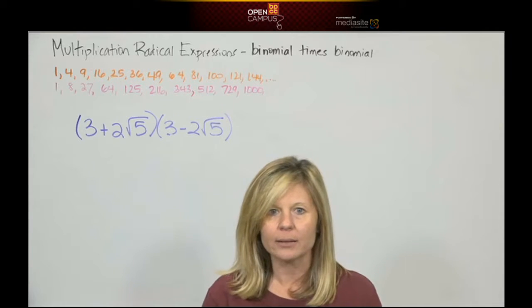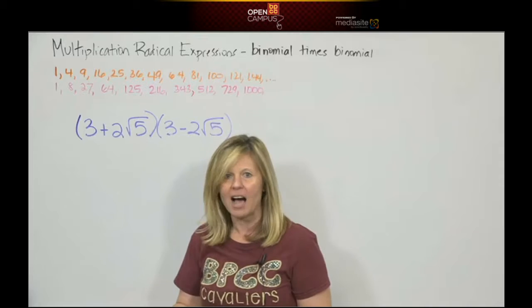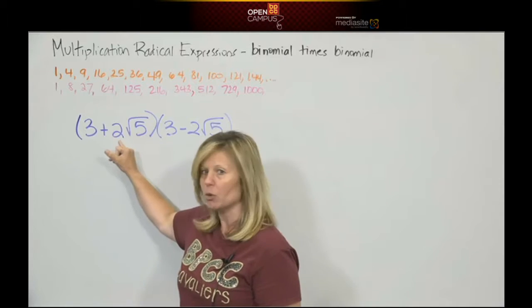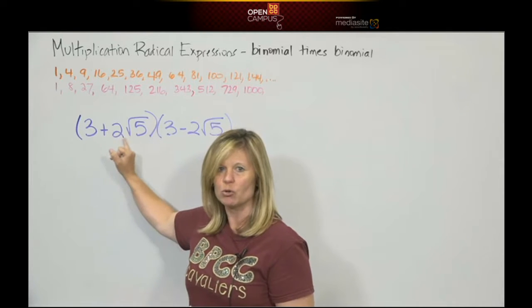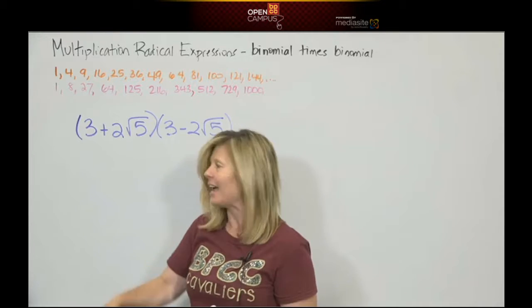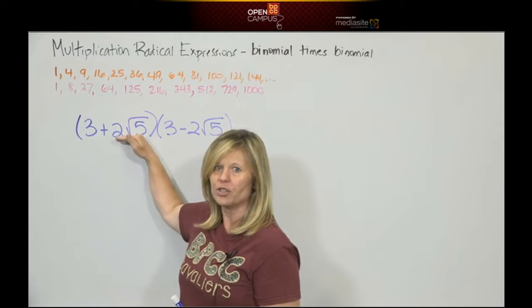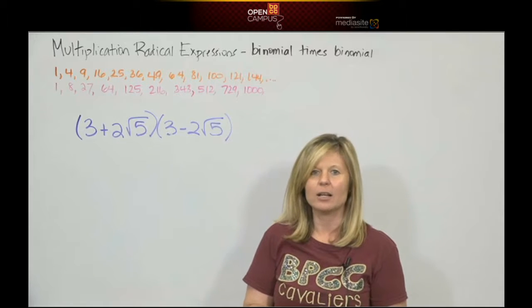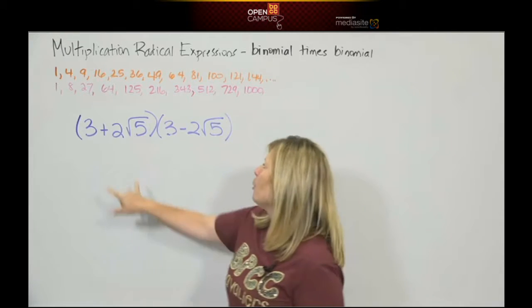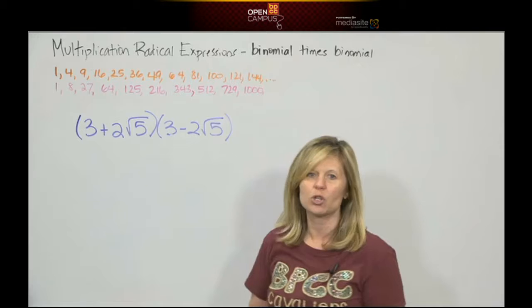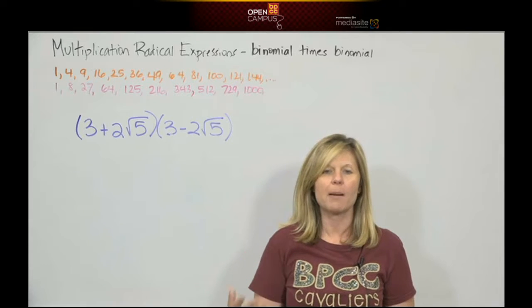They're not alike. You can't add 3 plus 2 and make 5 because it's not 3 plus 2. It's 3 plus 2 square roots of 5, and they're not alike. This is a whole number. This is a radical. So we can't do what's inside. So now we need to multiply. But we have 2 terms times 2 terms, which is a binomial times a binomial.